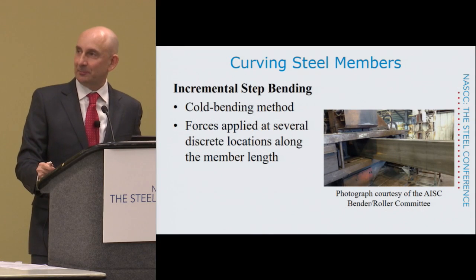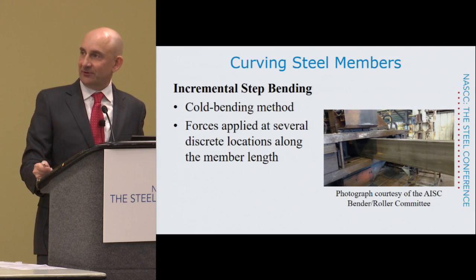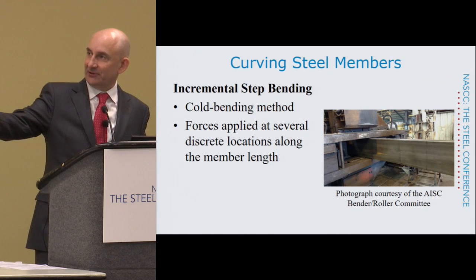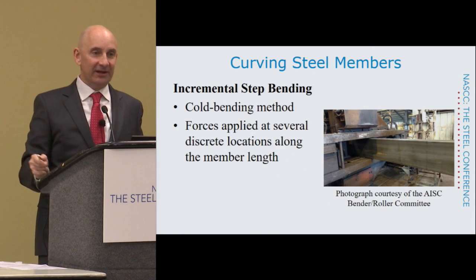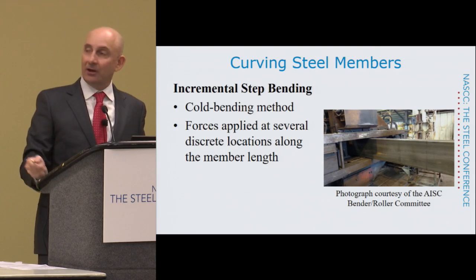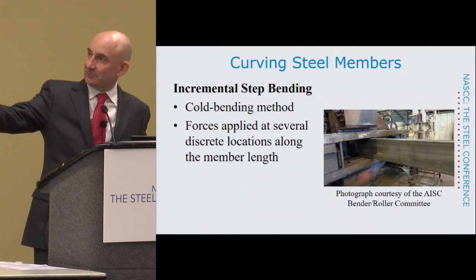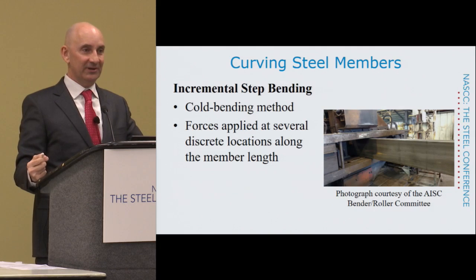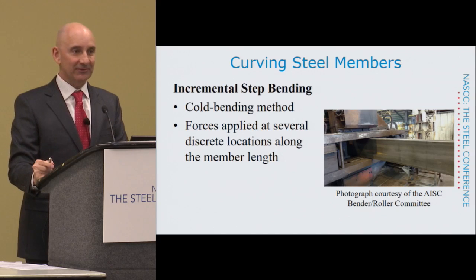Another method is incremental step bending. The member — what looks like a rectangular HSS — is fed through the machine and a force is applied in a cantilever bending action, then fed through again. That's the incremental part: it's bent incrementally as it progresses through the machine. This is also a cold bending method.